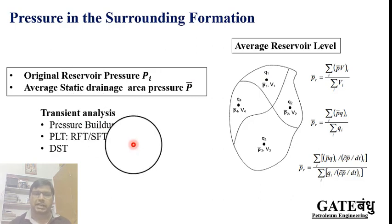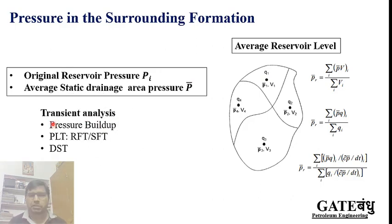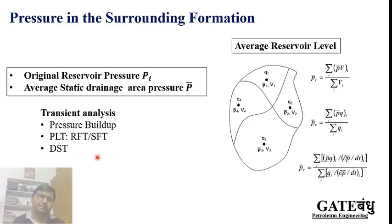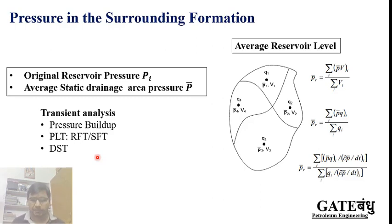When we talk about transient analysis techniques, we apply three techniques: pressure buildup, RFT and SFT (RFT is a Schlumberger tool and SFT is a Halliburton tool, also called the production logging tool), and DST which is an earlier version of RFT. We will look into these in detail later.